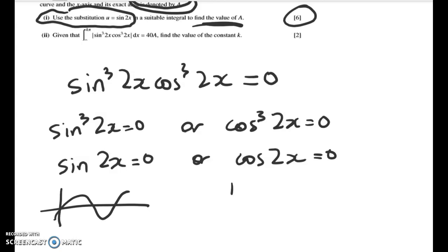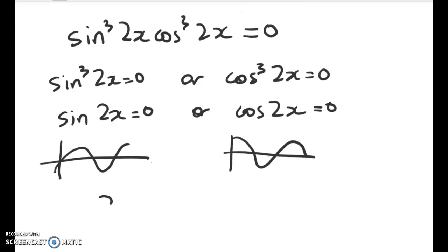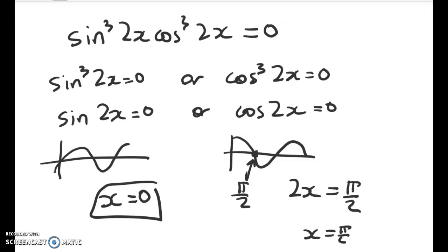So just really quickly sketching the two curves, we can see that here the first solution happens at x equals 0. And this point here is pi on 2. So the first solution here is 2x equals pi on 2, x is equal to pi on 4. So that's good.